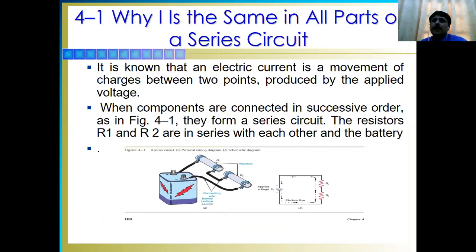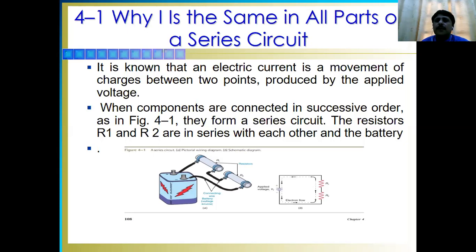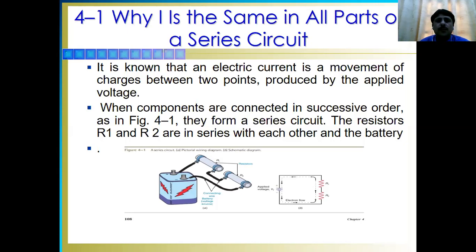An electric current is a movement of charges between two points produced by the applied voltage. When components are connected in successive order, they form a series. The resistors are in series with each other and with the battery, in a sequential order between two points where current flows through the applied voltage. When two points have only one path to flow the current, that is called series.